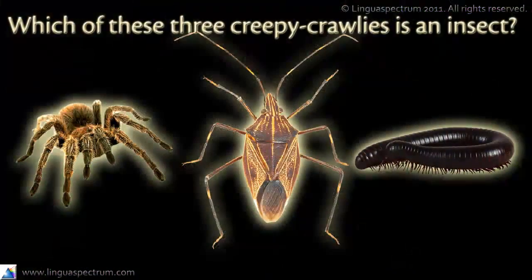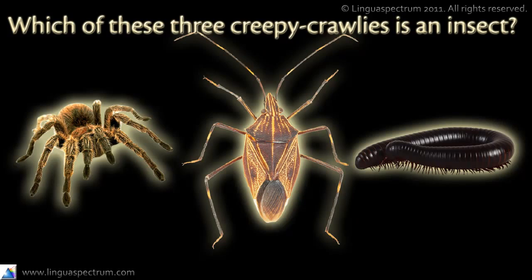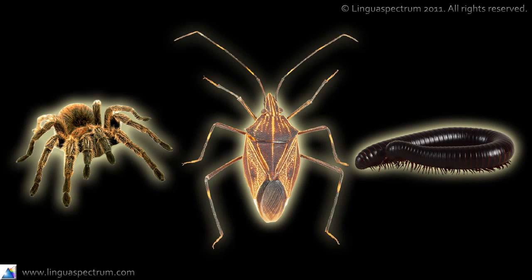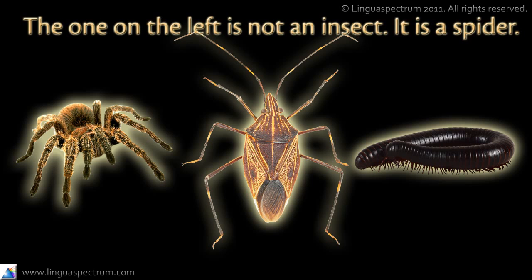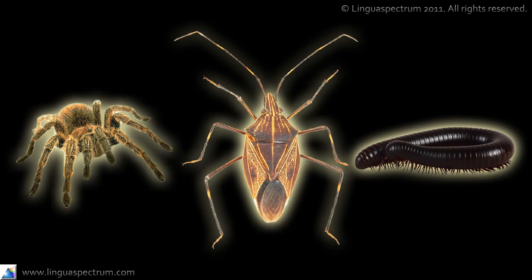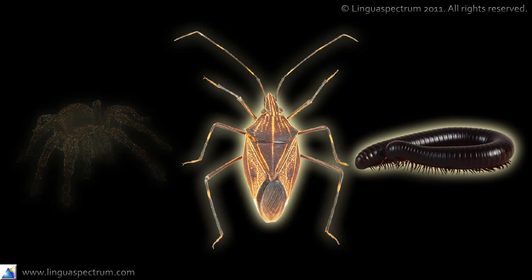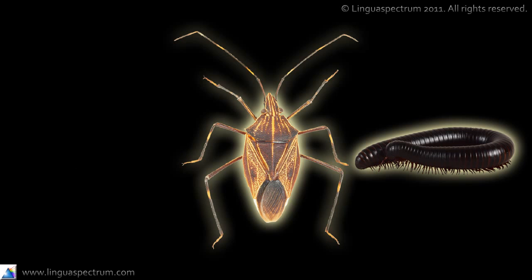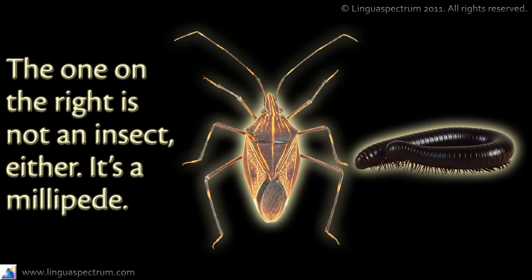Which of these three creepy crawlies is an insect? The one on the left is not an insect — it's a spider. The one on the right is not an insect either — it's a millipede.